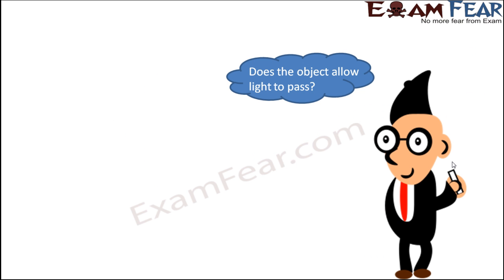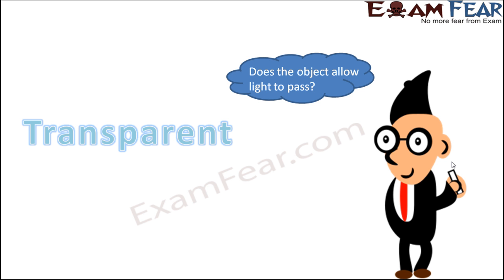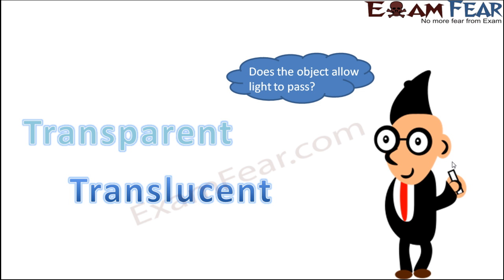Now, does every object allow light to pass through it? Based on this criteria, all objects can be classified into three types: transparent, translucent, and opaque. These are the three categories of objects.